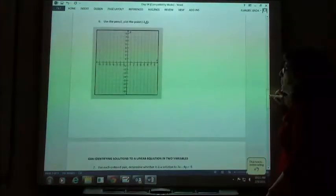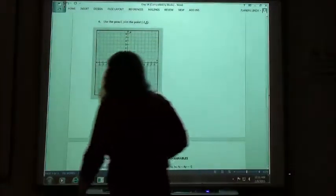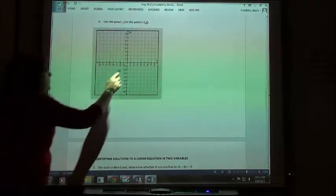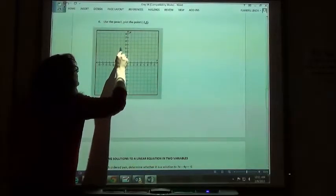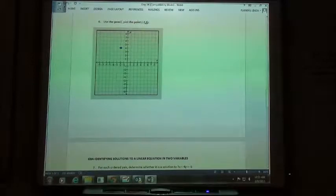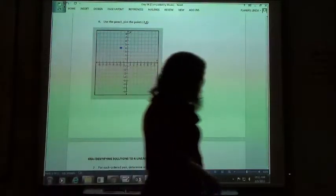Number 6, if we do negative 2, 4, we would go 2 back and 4 up. 2 to the left and up 4, there's my dot. Those hopefully were pretty easy.